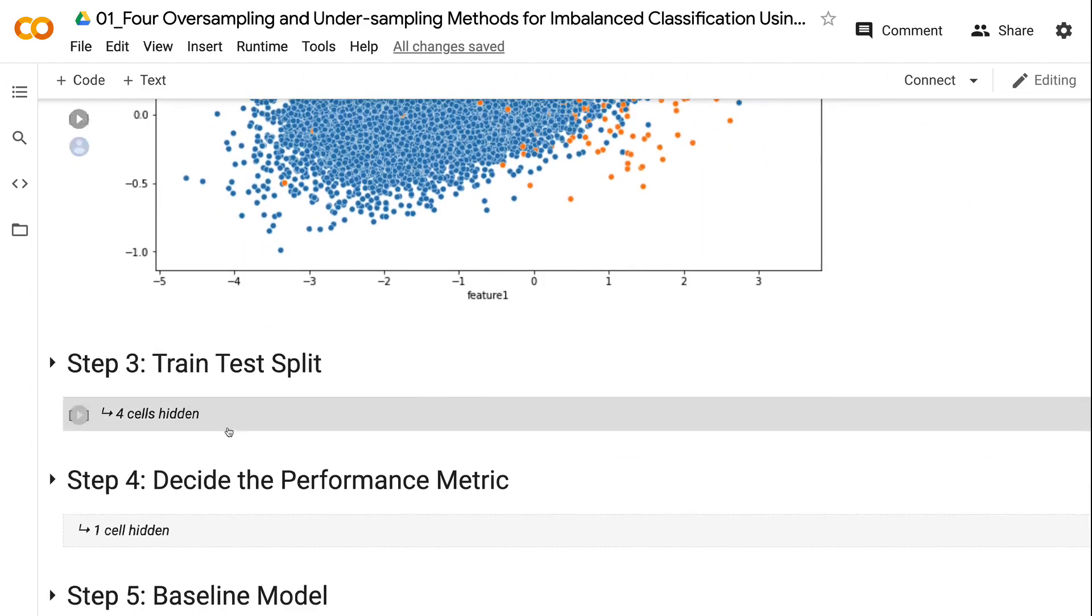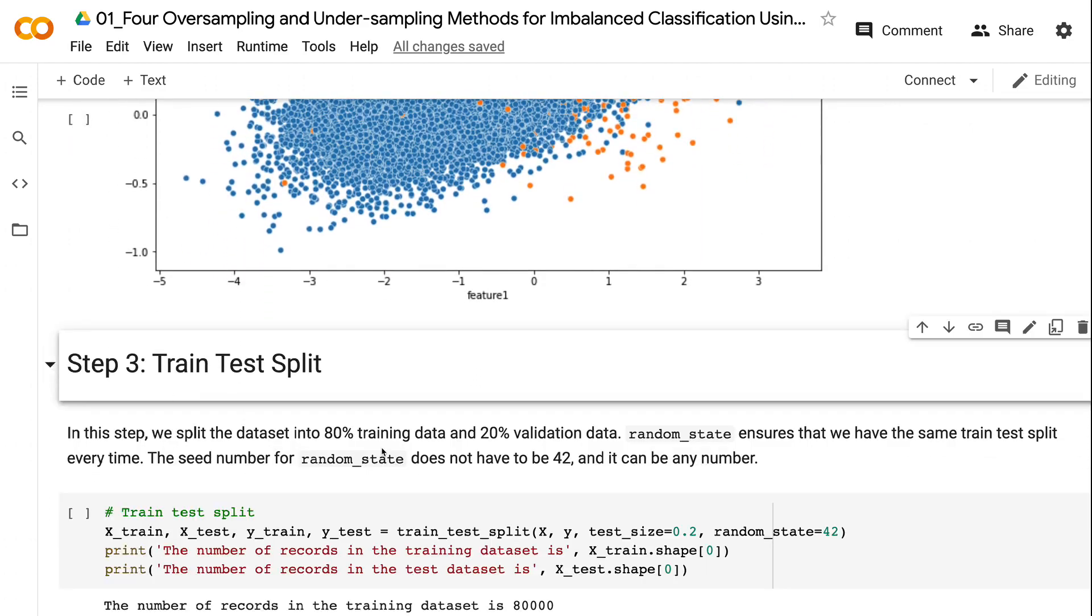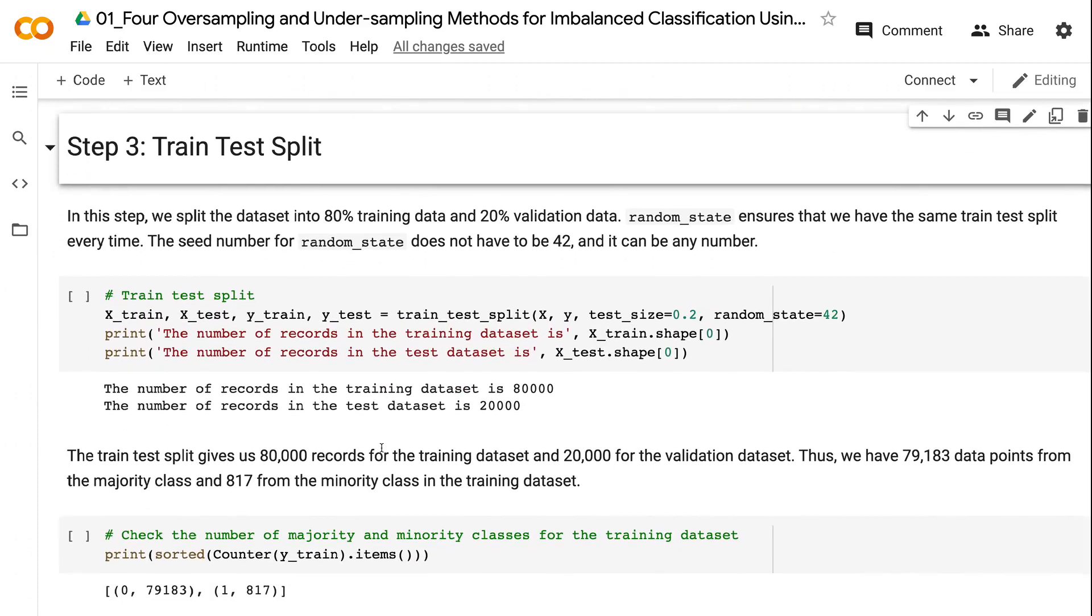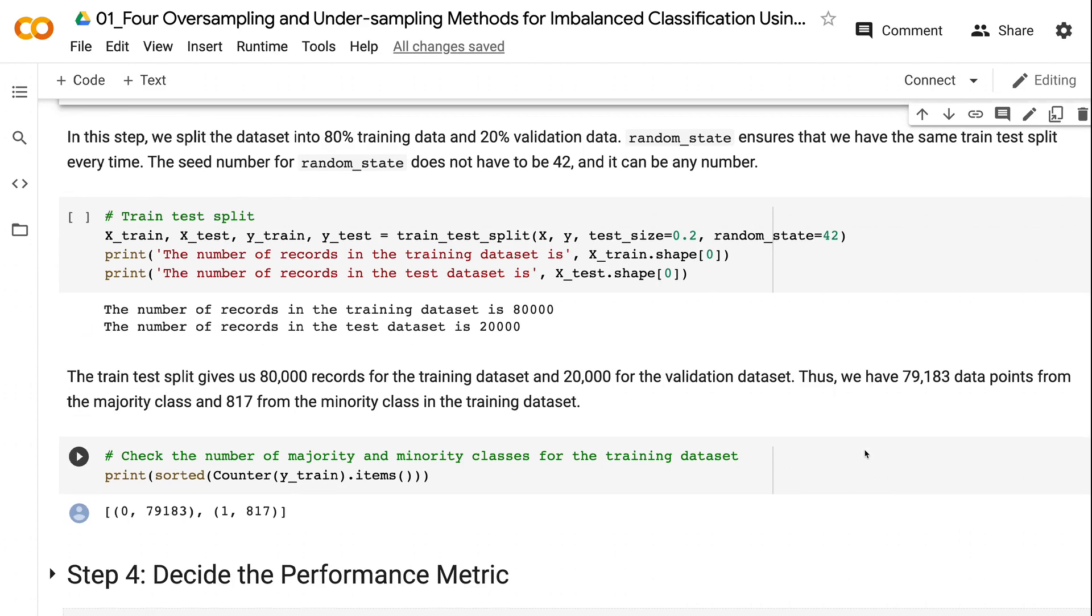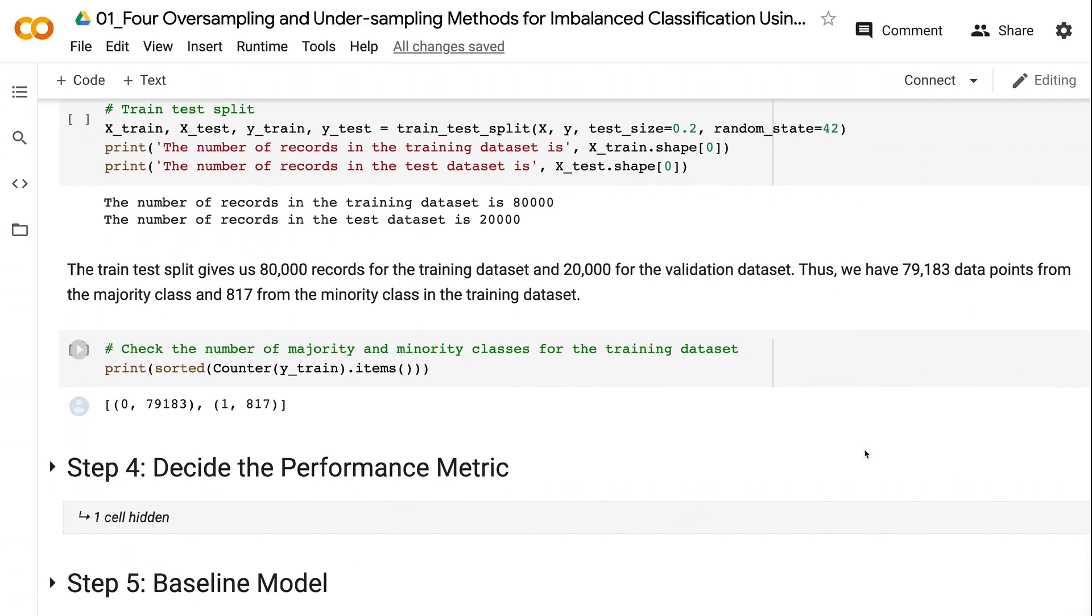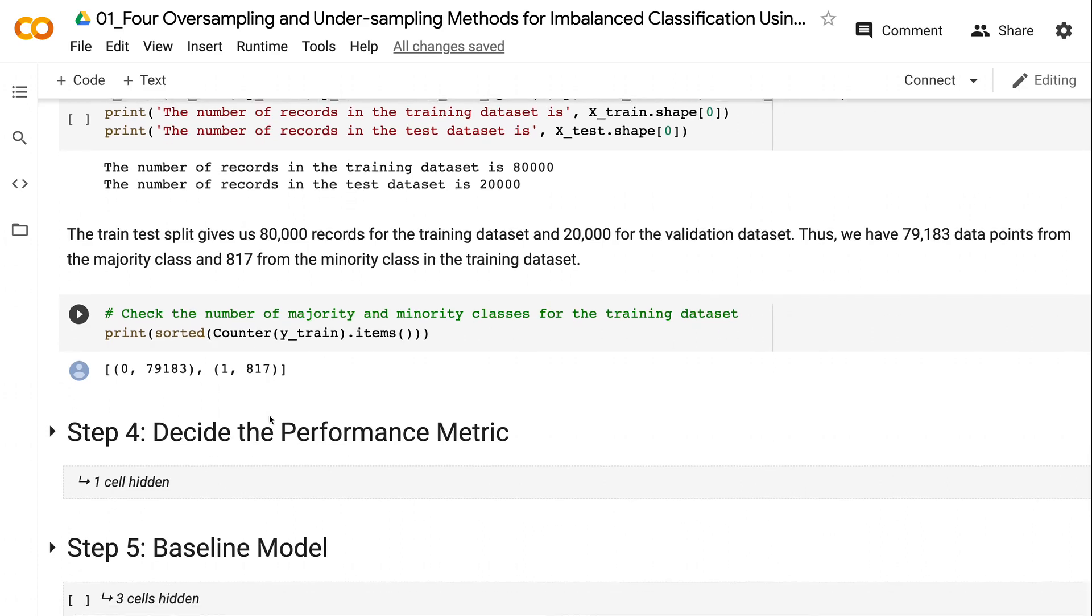The next step is to do a train test split for the imbalanced data. In this step, we split the dataset into 80% training and 20% validation. Random state ensures that we have the same train test split every time. The seed number for random state does not have to be 42, and it can be any number. The train test split gives us 80,000 records for the training dataset, and 20,000 for the validation dataset. Thus, we have 79,183 data points from the majority class and 817 from the minority class in the training dataset.